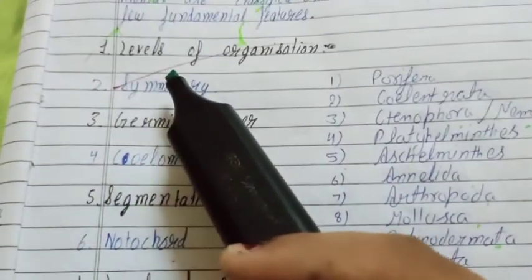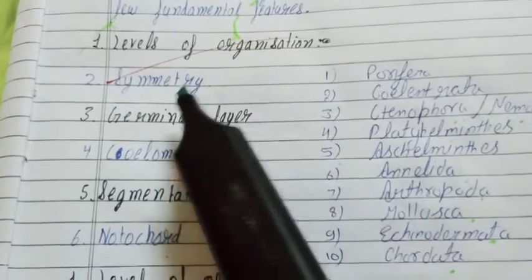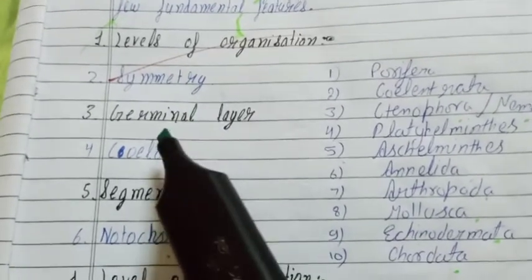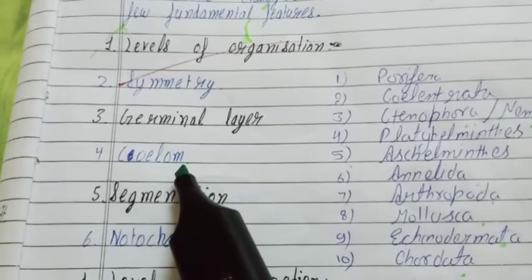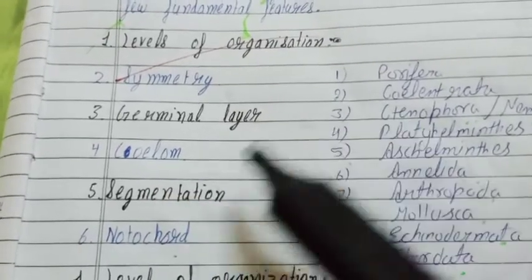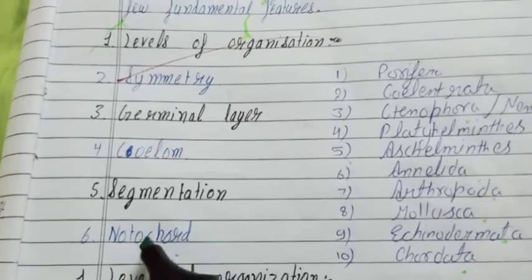The first basis is level of organization. Second is symmetry. Third is germinal layer. Fourth basis is coelomic or non-coelomic, segmentation, and notochord.